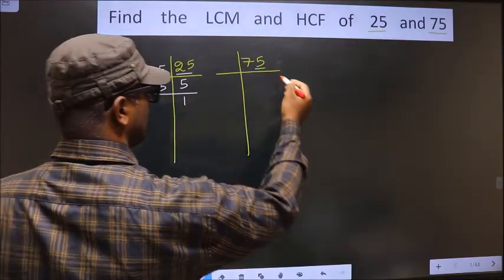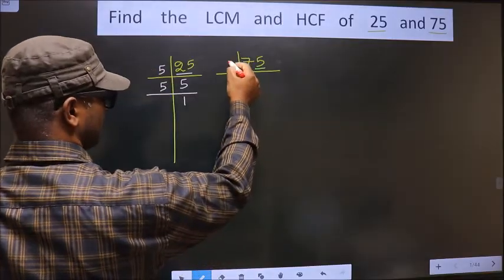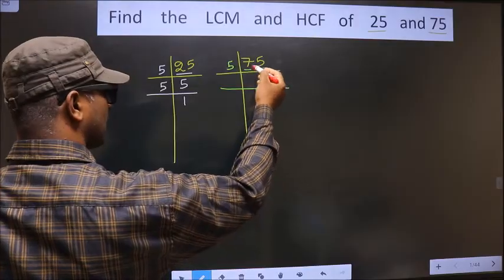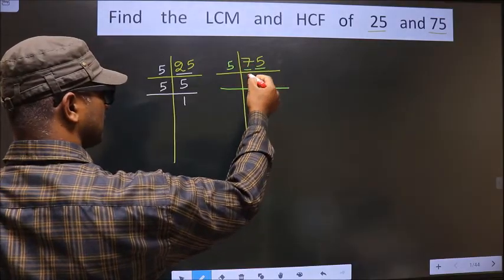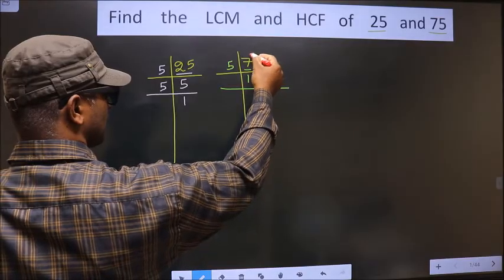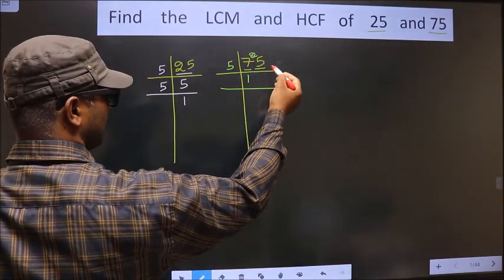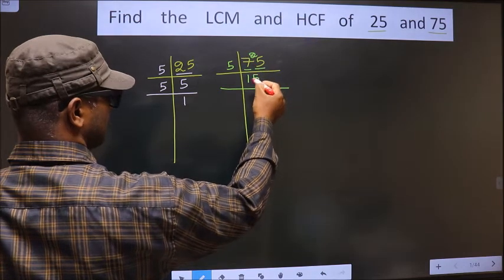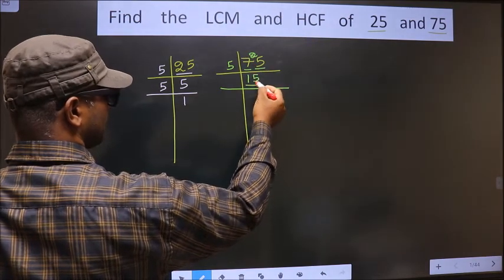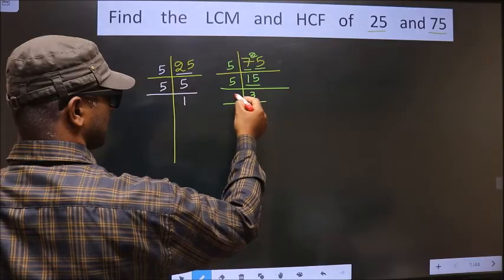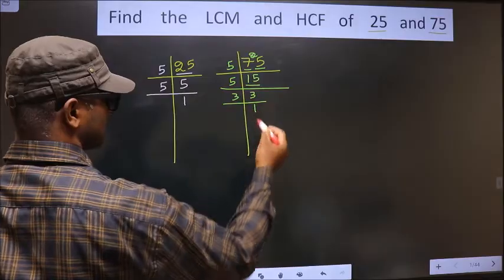Now for this number, last digit is 5, so we take 5 here. First number is 7. A number close to 7 in 5 table is 5 once 5. 7 minus 5 is 2, 2 carried forward making it 25. When do we get 25 in 5 table? 5×5 is 25. Now here we have 15. 15 is 5×3 is 15. Now 3 is a prime number, so we take 3 once 3.